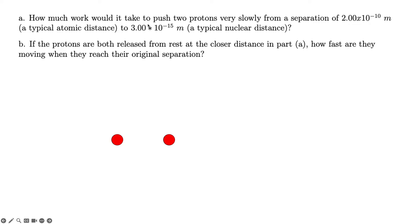The problem asks how much work it would take to push two electrons very slowly from a separation of 2×10⁻¹⁰ meters, a typical atomic distance, to 3×10⁻¹⁵ meters, a typical nuclear distance. You are given two points, and you have to find the work that it would take for the electric field to accomplish this separation.